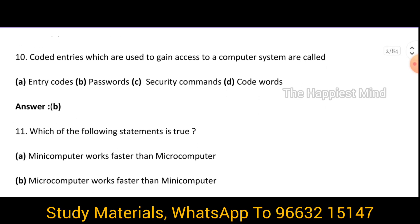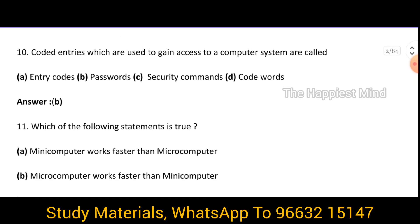Question 10: Coding entries which are used to gain access to a computer system are called dash. Answer is option B — passwords. Passwords are usually the coded entries which are used for gaining access to the computer system.